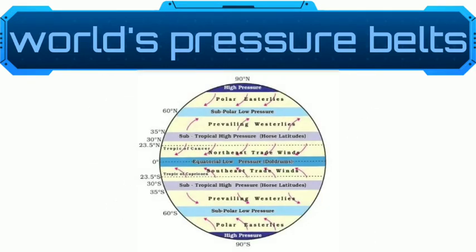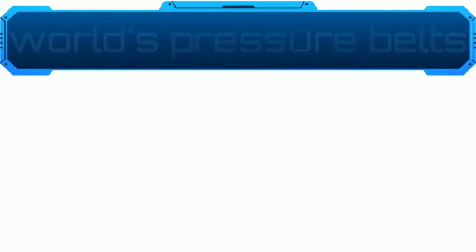There are following permanent pressure belts: Equatorial low pressure belts, Subtropical high pressure belts, Subpolar low pressure belts, and Polar high pressure belts.